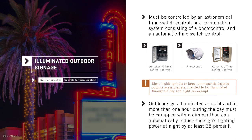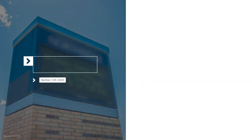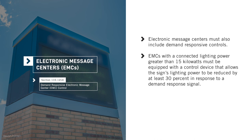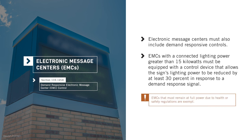In addition, outdoor signs that are illuminated at night and for more than one hour during the day must be equipped with a dimmer that can automatically reduce the sign's lighting power at night by at least 65%. A specific type of outdoor sign called an electronic message center, or EMC, must also include demand responsive controls. EMCs with a connected lighting power greater than 15 kilowatts must be equipped with a control device that allows the sign's lighting power to be reduced by at least 30% in response to a demand response signal. EMCs that must remain at full power due to health or safety regulations are exempt.